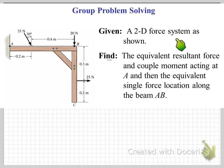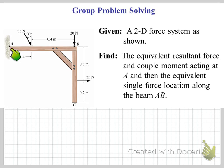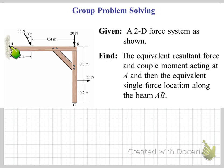In this problem we have a 2D force system acting on a beam type structure. We want to find the equivalent resultant force and couple moment that act at point A. Once we've done that, we want to find the equivalent single force acting along the beam AB — somewhere along here we can place a single equivalent force, which is also equivalent to our original three forces applied to the beam.